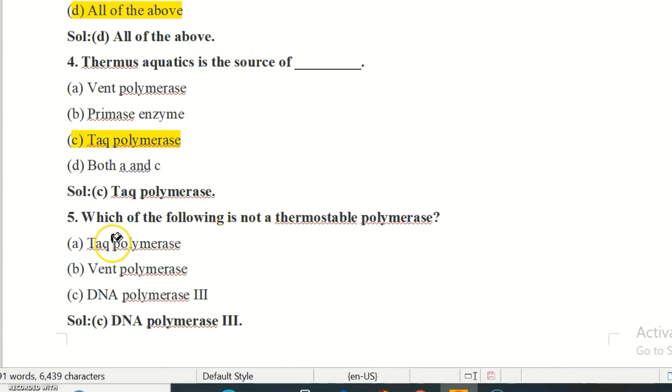MCQ five: which of the following is not a thermostable polymerase? Option A: Taq polymerase. Option B: vent polymerase. Option C: DNA polymerase III. The correct option is C, DNA polymerase III.